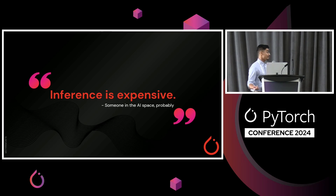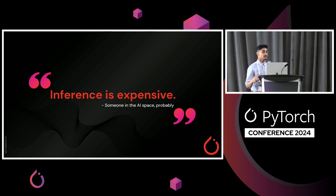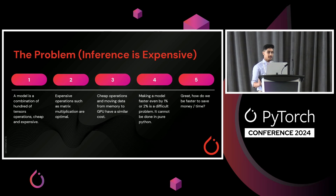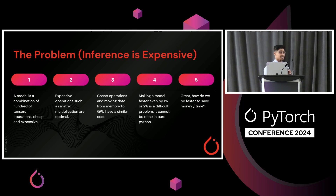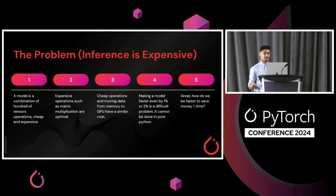I'm sure everyone's heard before: inference is expensive. I left the quote generic because people say this all the time. Inference is costly and we look for so many ways to make it cheaper. There are a lot of options already discussed — using better hardware, optimizing that hardware, et cetera. A model is a combination of hundreds of tensor operations. Some are cheap, some are expensive. There are many smart people who work really hard to make these matrix multiplications as optimal as possible.